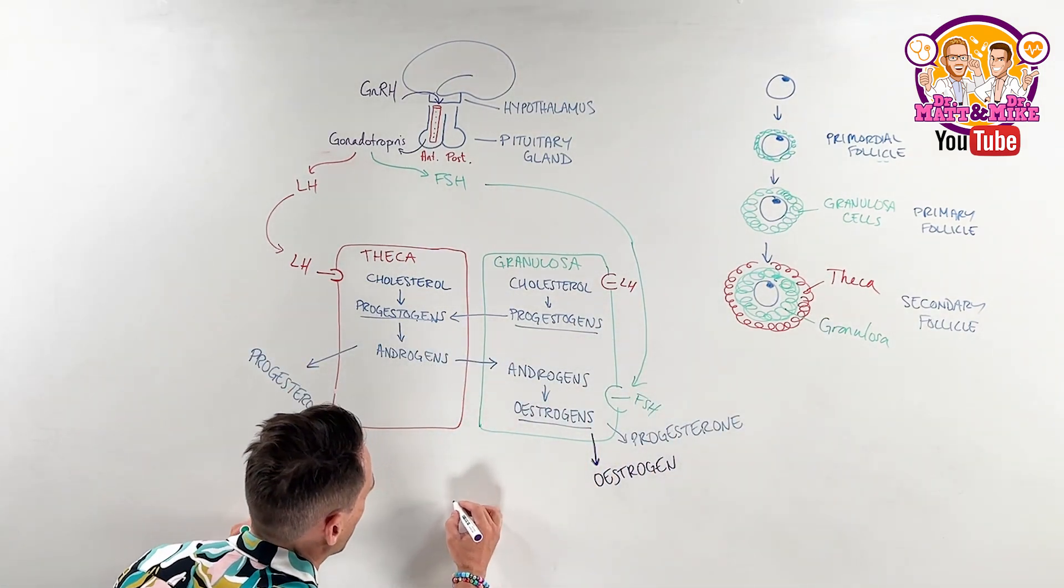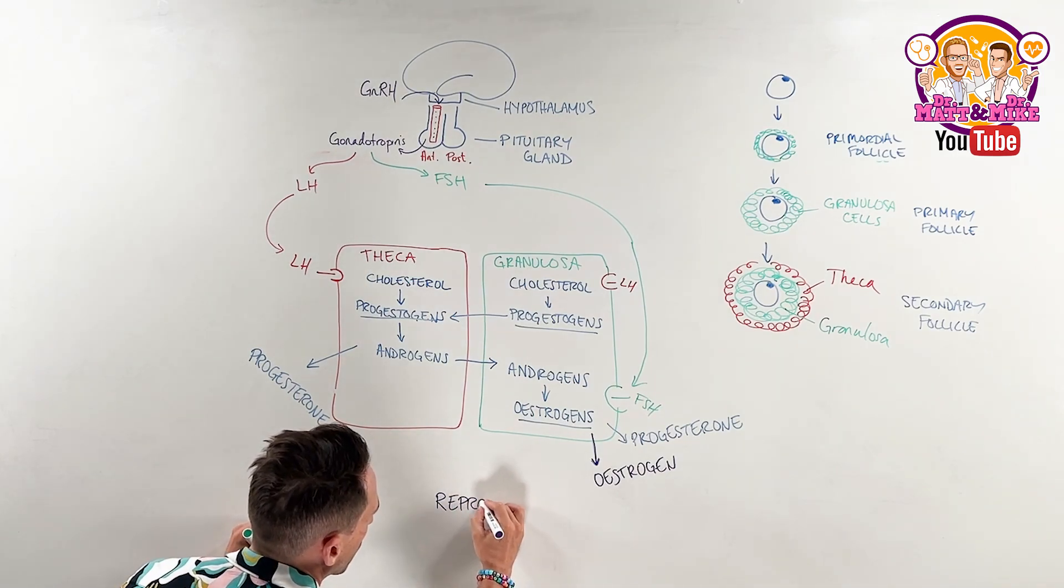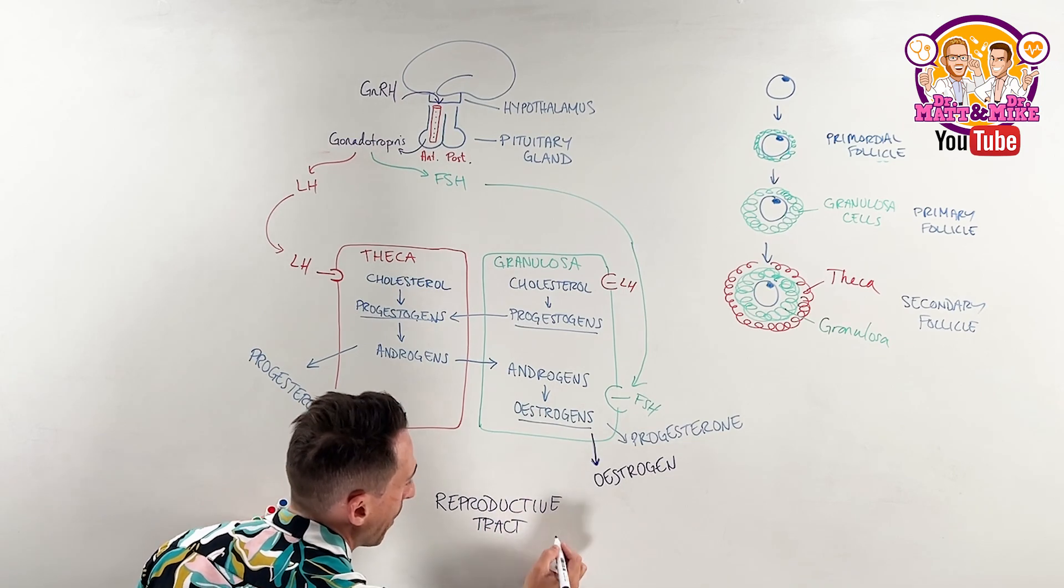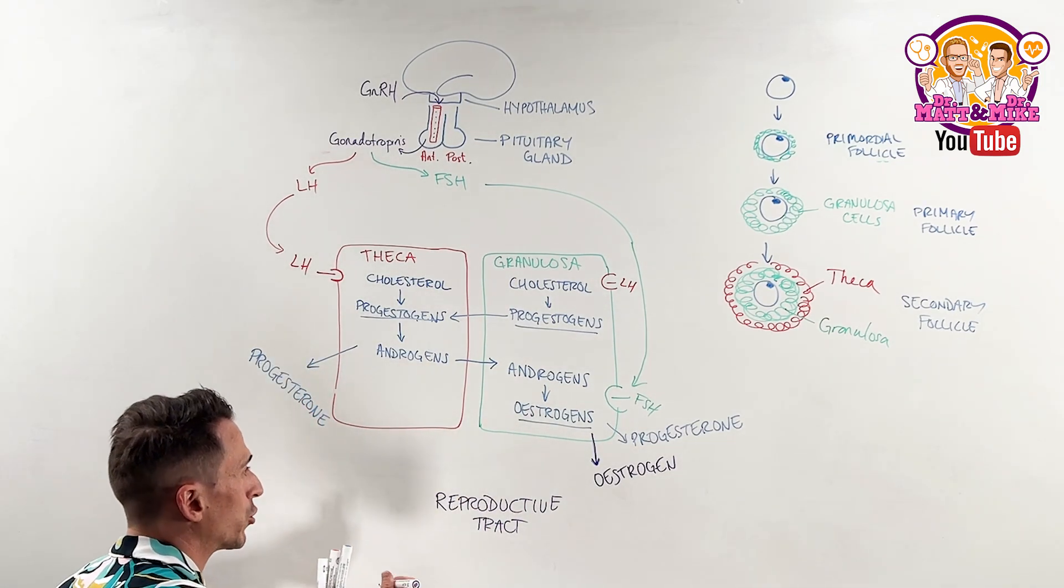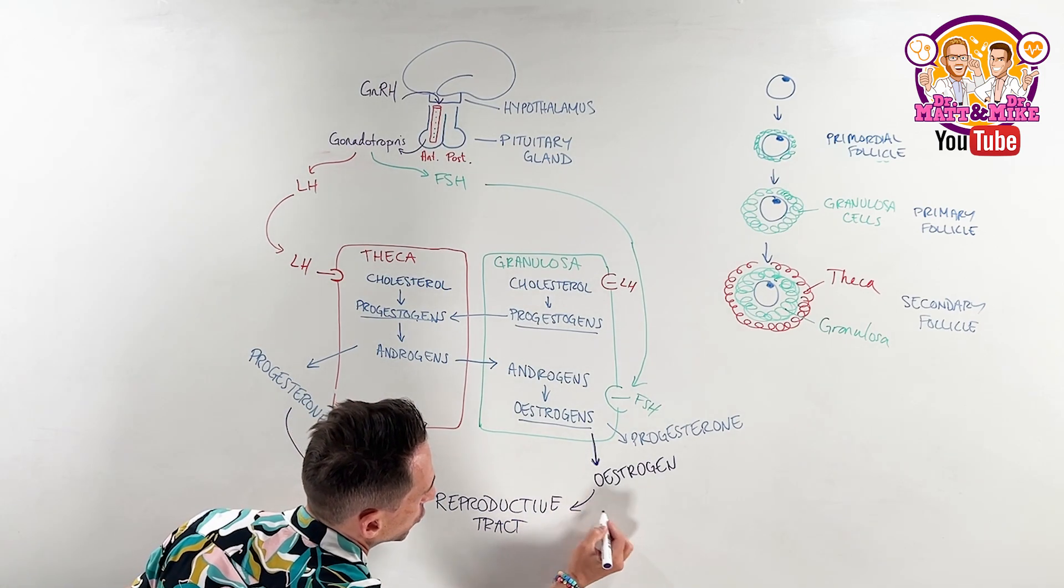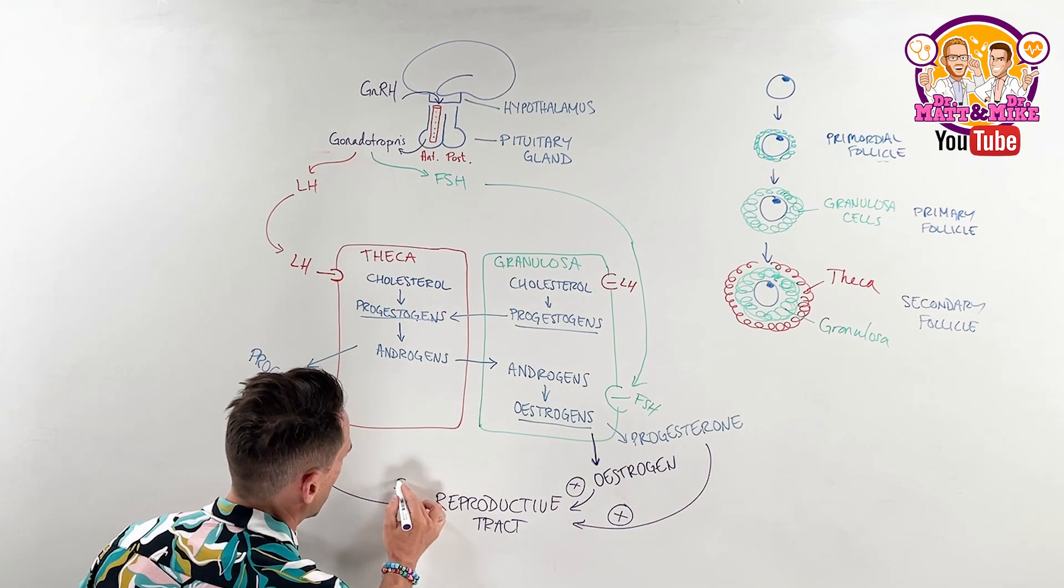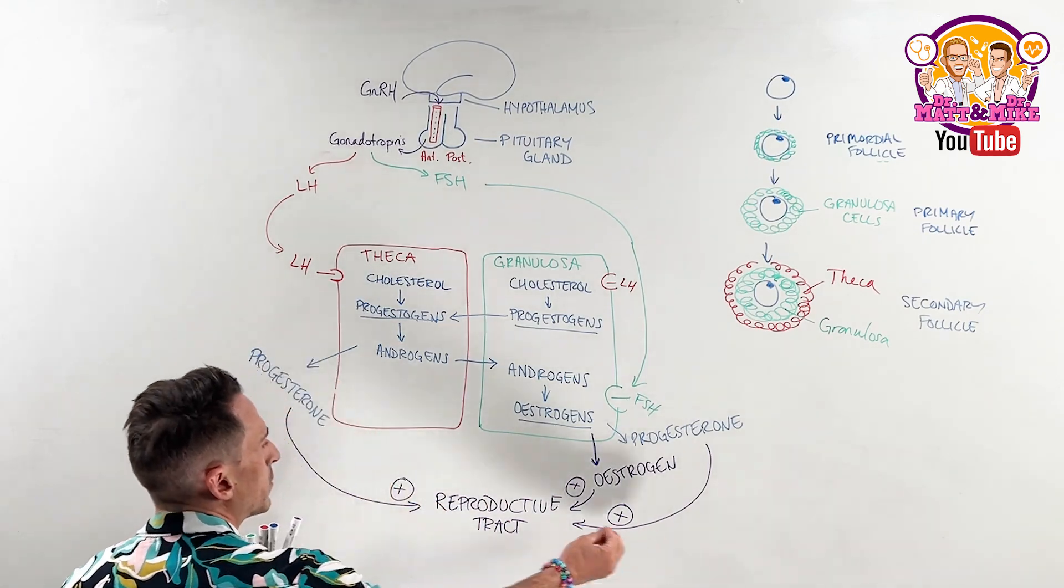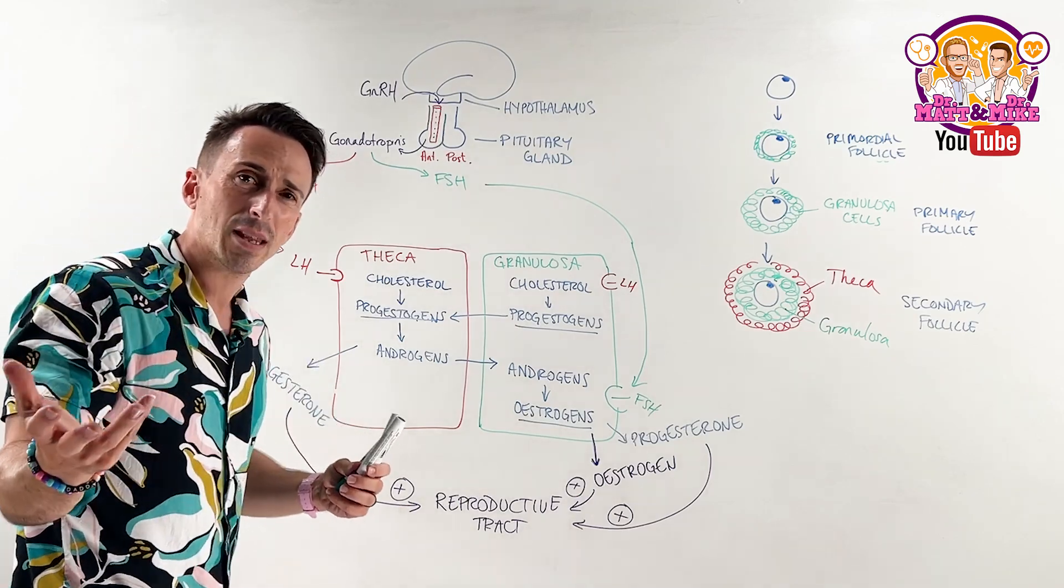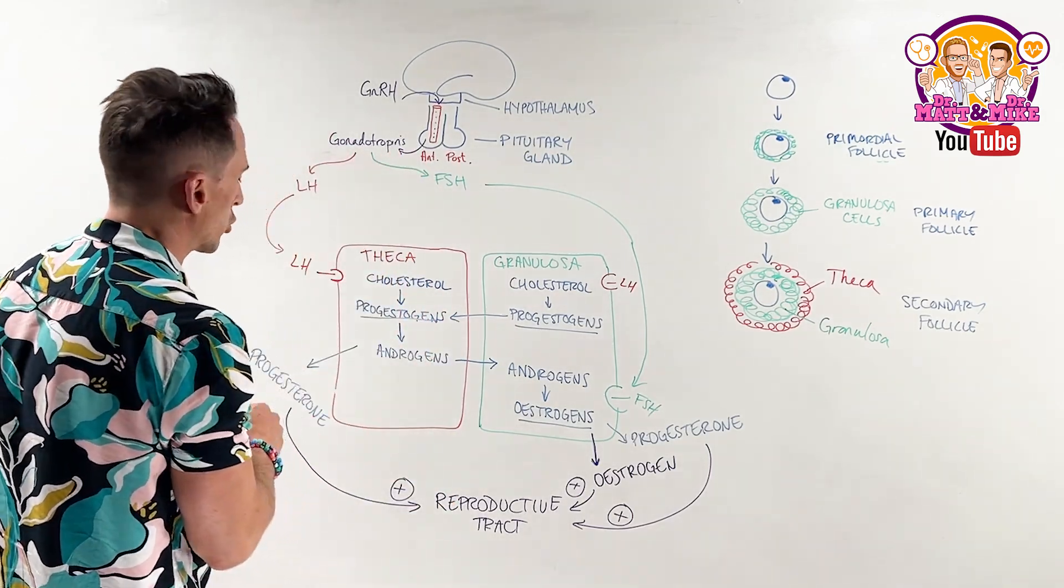What progesterone and estrogen do is they work on the reproductive tract. Reproductive tract. You might be thinking, what are we referring to here? Many aspects such as the endometrial lining. And so what the progesterone does and the estrogen does is they all work to positively facilitate. So it feeds back and says increase. Develop. When it comes to the endometrial lining, thicker, more vascularized. Start to develop glands and so forth.